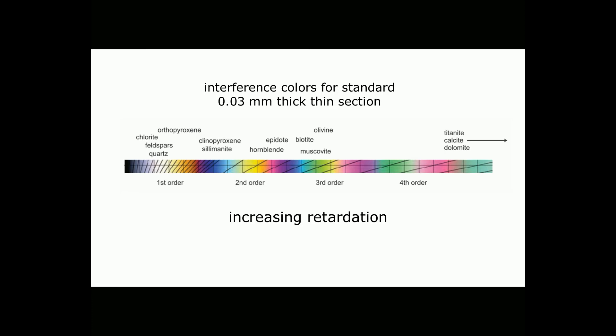The repeating occurs because it doesn't matter whether two waves are separated by one wavelength, or two wavelengths, or three or four — they can still be in phase. So we end up with first-order, second-order, third-order, and fourth-order colors. For routine mineral identification, the order of interference colors is often more important than the actual color, because a lot of things including sample thickness can cause colors to vary.